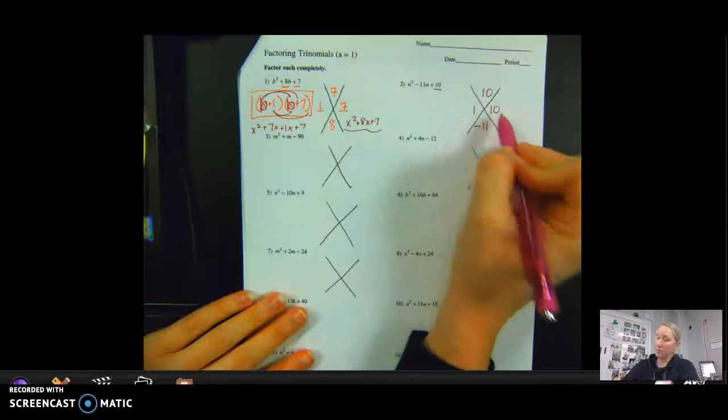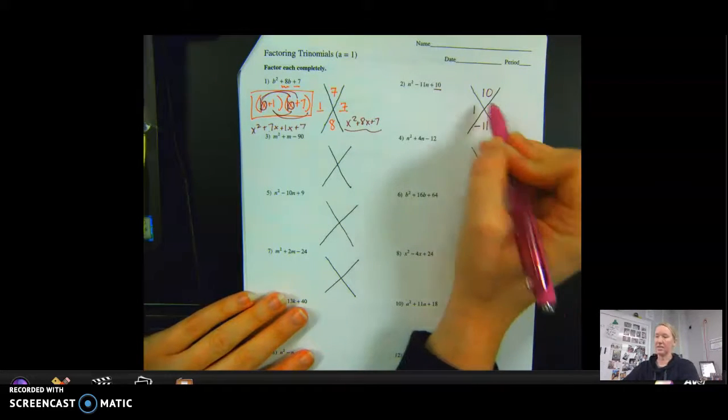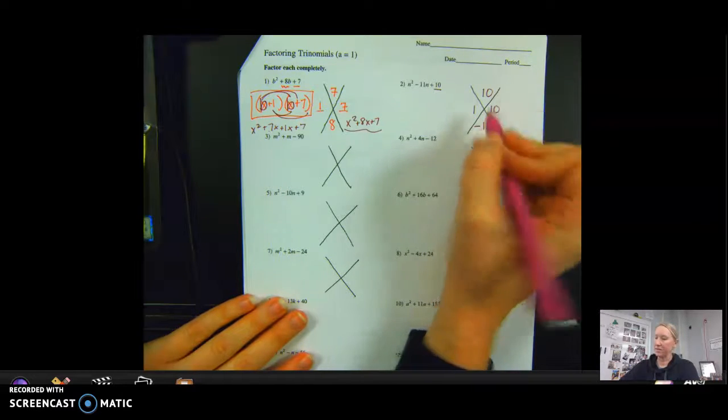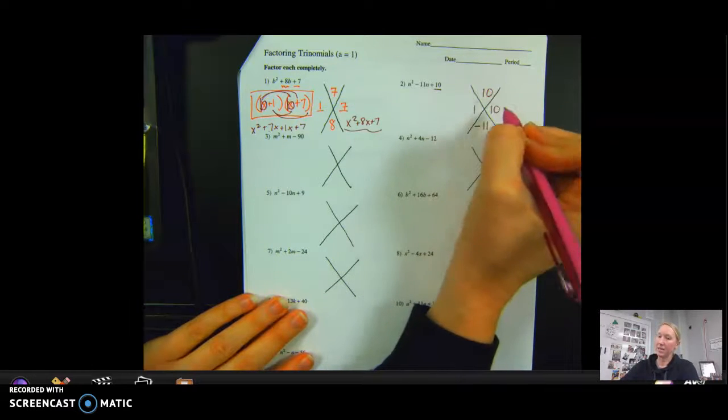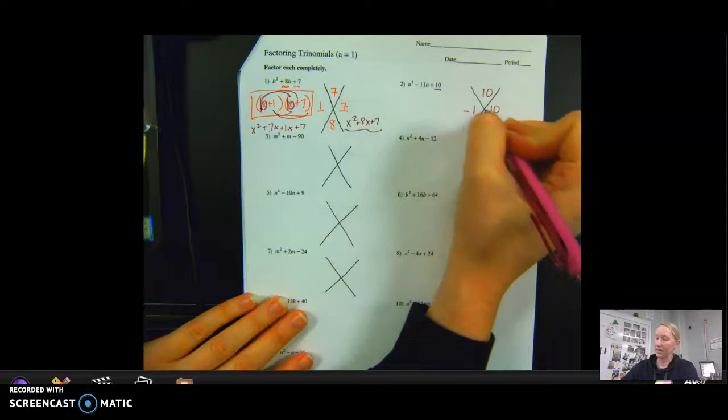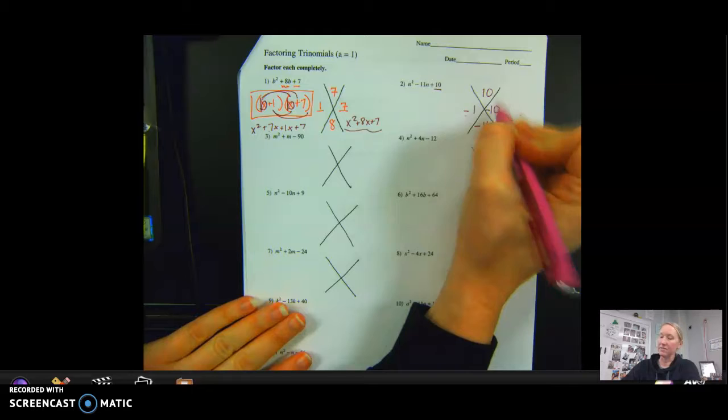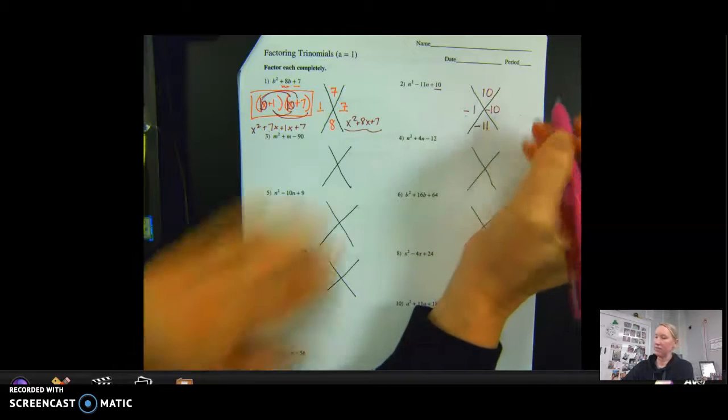But now, when I multiply, I want a positive. So a positive times a positive does give us a positive, but a positive plus a positive does not give us a negative. The only other way to get a positive 10 when I multiply, but negative when I add, would be negative and negative. So two negatives make a positive when I multiply. Negative 1 times negative 10 is a positive 10, and then negative 1 plus negative 10 does give me that negative 11.